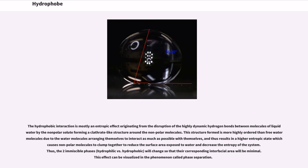And thus results in a higher entropic state which causes nonpolar molecules to clump together to reduce the surface area exposed to water and decrease the entropy of the system. Thus, the two immiscible phases, hydrophilic versus hydrophobic, will change so that their corresponding interfacial area will be minimal. This effect can be visualized in the phenomenon called phase separation.